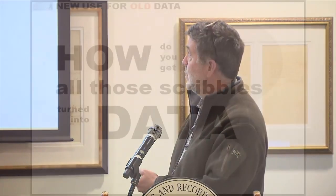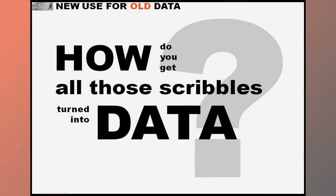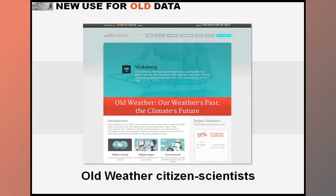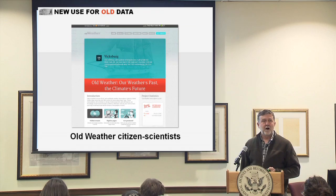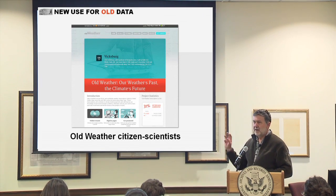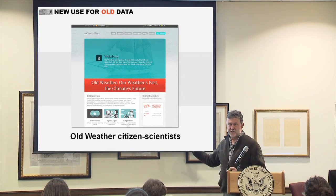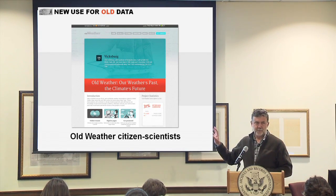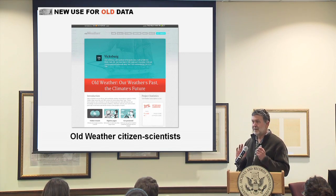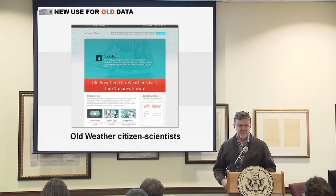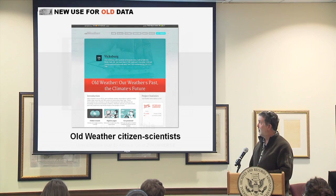How do you get all these scribbles turned into data? This is the problem, and this is why we have Old Weather. We put the logbooks online, volunteers come and help us transcribe it, they help us with the data, they get a shot at the remarks pages because it's really fun. It's interesting and it drives their passion, and it works out for everybody.